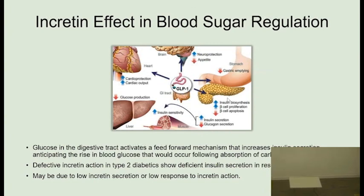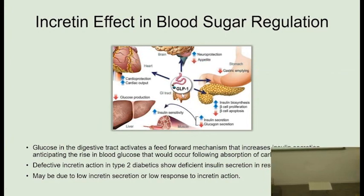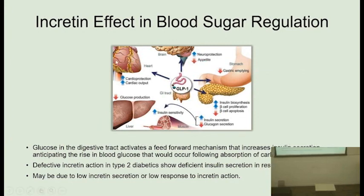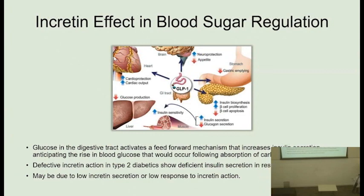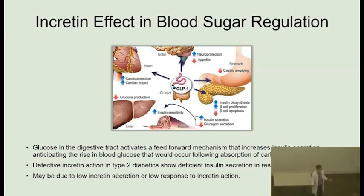For example, in people with type 2 diabetes, there could be a problem with low incretin production, and there are treatments in that direction — sometimes incretins are degraded very quickly, so we give inhibitors of their degradation. This shows the importance of learning physiology well: when you study pharmacology, if you don't remember what incretins are, it's impossible to understand the mechanism of action of those medications, and you waste a lot of time going back.